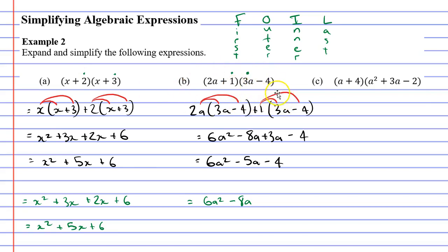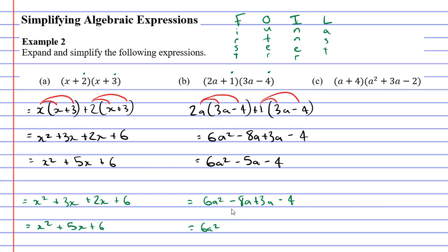1 and 3a are in the middle of the expression. 1 times 3a is 3a, so plus 3a. Finally, the Last step — the last two terms in each set of brackets are 1 and minus 4; 1 times minus 4 is minus 4. We get the exact same result as the original method, which simplifies to 6a squared minus 5a minus 4.